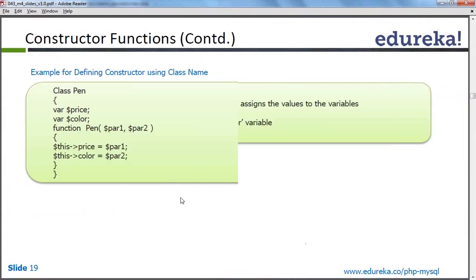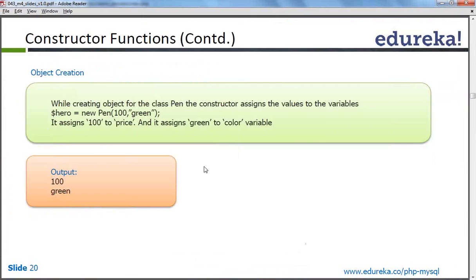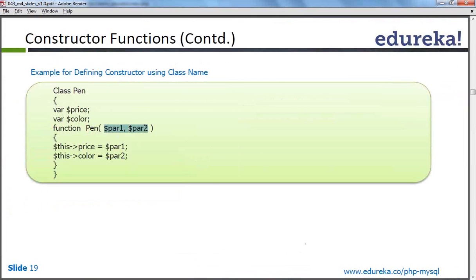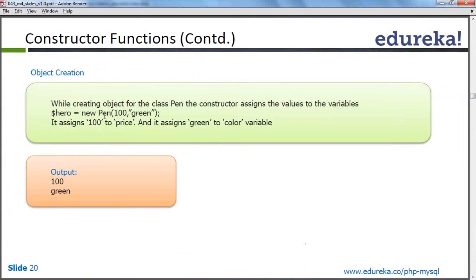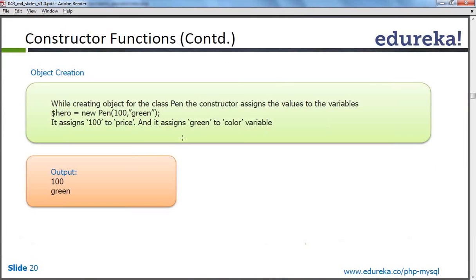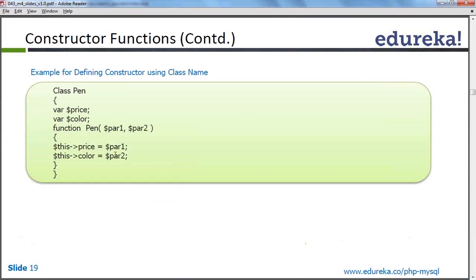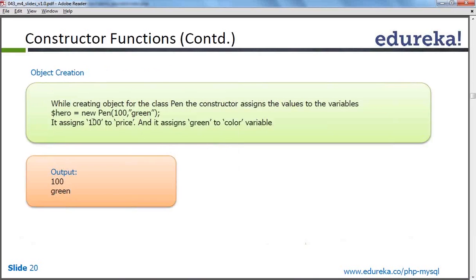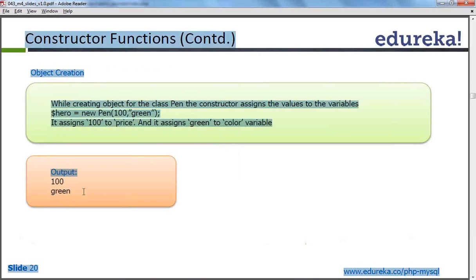Moving to the next slide, here again it shows an example of object creation — how we can create an object and pass values to the constructor. These values are basically for the construct function. Here I am passing two parameters to the constructor function, so when I create the object of the class I have to pass values for those two parameters. I get the output 100 and green because I am calling function pen and printing its values.